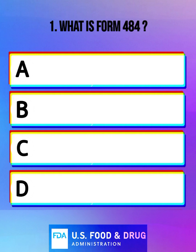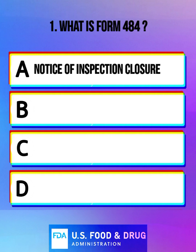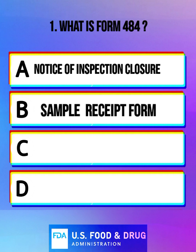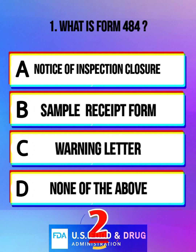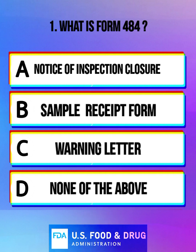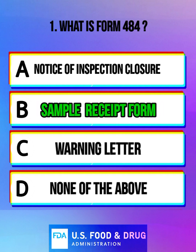What is Form 484? Option A: notice of inspection closure. Option B: sample receipt form. Option C: warning letter. Option D: none of the above. And the correct answer is sample receipt form.